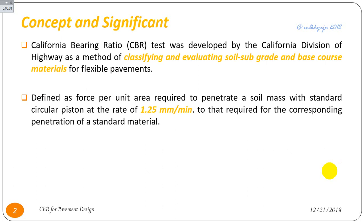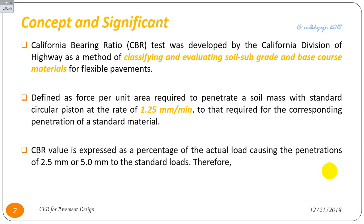CBR is defined as the force per unit area required to penetrate a soil with a standard circular piston at the rate of 1.25 mm per minute, relative to that required for the corresponding penetration of a standard material. CBR is expressed as a percentage of the actual load causing penetration of 2.5 mm or 5 mm to the standard loads.